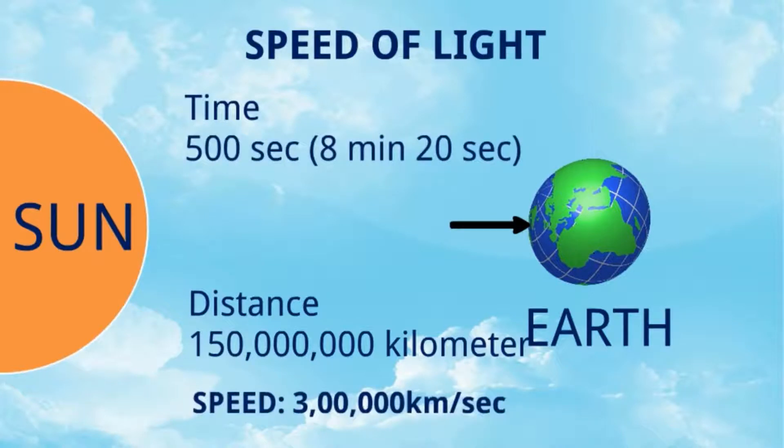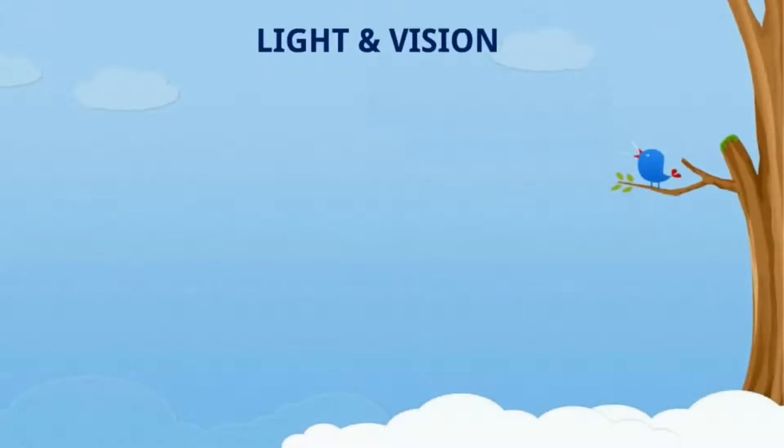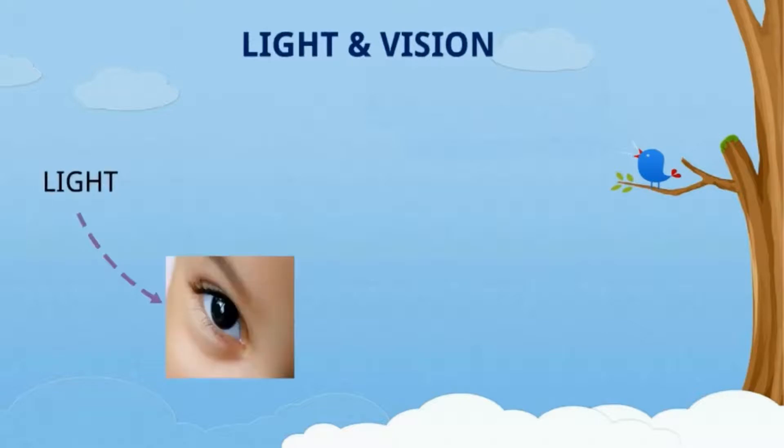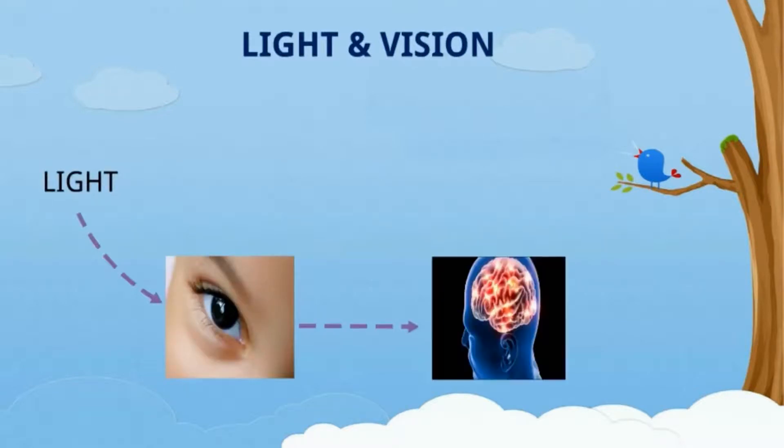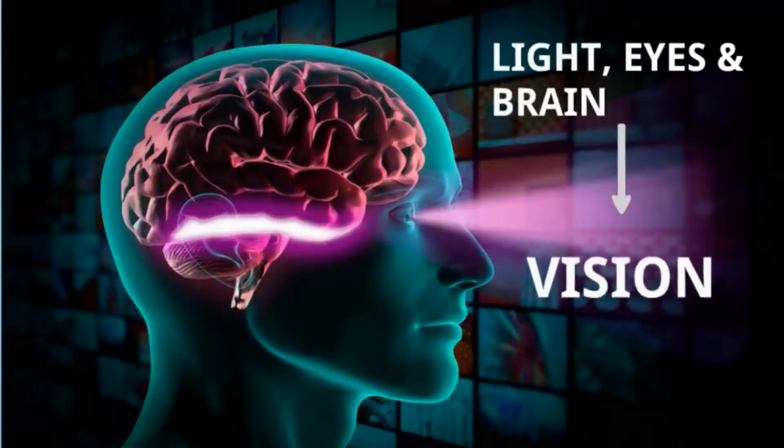Light and vision: see, there is one bird. How do we understand that this is a bird? Can anybody say it's not a bird, it's an elephant? How do you understand that this is a bird? It is because of light. Light comes in our eyes, our eyes give a signal to our brain, and in our brain all the images of things are already stored. When we see, the brain gives a signal that this object is a bird. So light, eyes, and brain together help for vision.